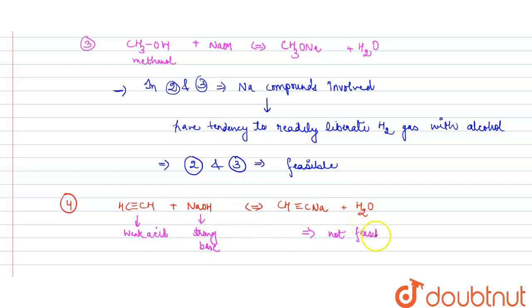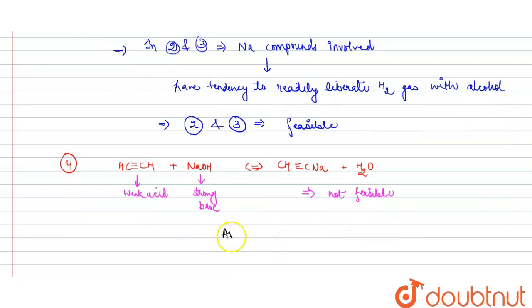So this particular reaction is not feasible because this acid cannot react with this NaOH. So this is a not feasible reaction, also the answer to our question. So we can write our final answer as option 4. Option 4 is not feasible. This is our final answer to the question. Thank you.